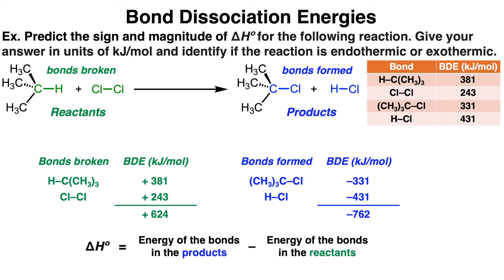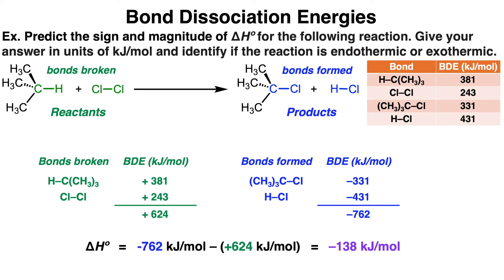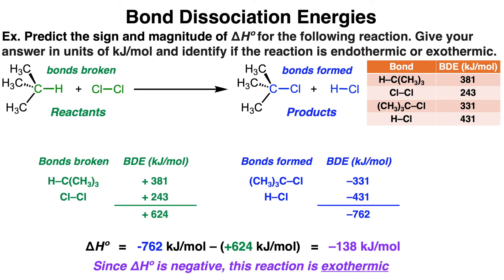Looking at the energy of the bonds being formed in the products, it costs 331 kJ/mol to form a carbon-chlorine bond, and 431 kJ/mol to form a hydrogen-chlorine bond. Both of these values add up to negative 762 kJ/mol. Whenever a bond is being formed, it releases energy, which is why the overall sign of this energy value is negative. Plugging these values into the equation — delta H0 equals energy of bonds in products minus energy of bonds in reactants — we get negative 762 minus positive 624, which equals negative 138 kJ/mol. Since delta H0 is negative, this reaction is exothermic, meaning it releases energy.